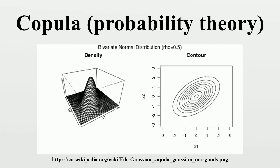In case the multivariate distribution has a density, it holds further that the joint density factors through the copula density. The theorem also states that, given the marginals, the copula is unique on the Cartesian product of the ranges of the marginal CDFs. This implies that the copula is unique if the marginals are continuous. The converse is also true: given a copula C and margins F₁,...,Fd, their combination defines a d-dimensional cumulative distribution function.